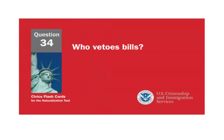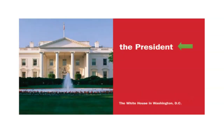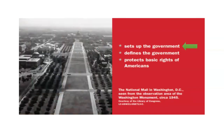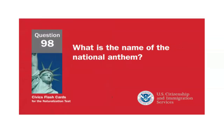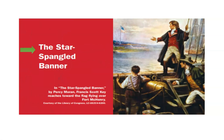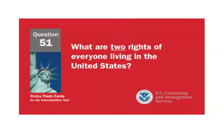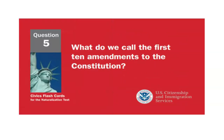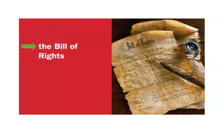Who vetoes bills? The president. What does the Constitution do? Sets up the government. What is the name of the national anthem? The Star-Spangled Banner. What are two rights of everyone living in the United States? Freedom of speech and freedom of religion. What do we call the first ten amendments to the Constitution? The Bill of Rights.